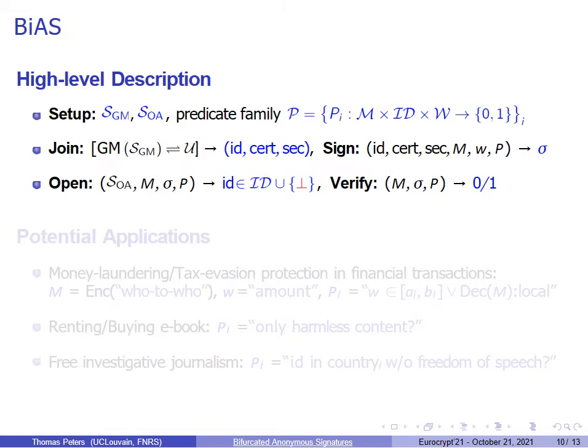To sign a message, a user with identity ID, a certificate, secret information, message M, a witness, and predicate P produces a signature sigma. To open a signature, the opening authority uses its secret key, assuming the signature is valid. To check validity, we need the message, the signature, and also the predicate chosen. The opening authority will either extract an identity or return a symbol indicating that the signature is statistically anonymous.